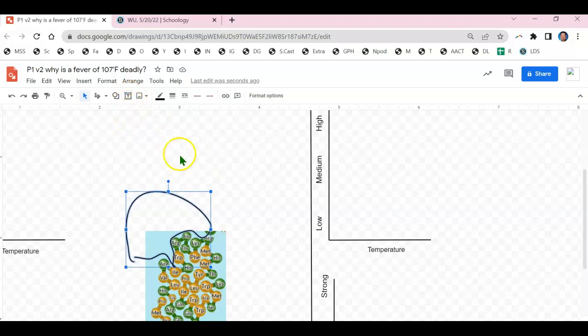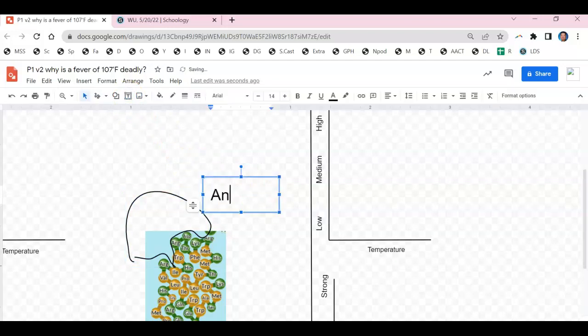Let's go ahead and label both so we can avoid any confusion. Click the T for a text box and then we'll call the one underneath the antibody.